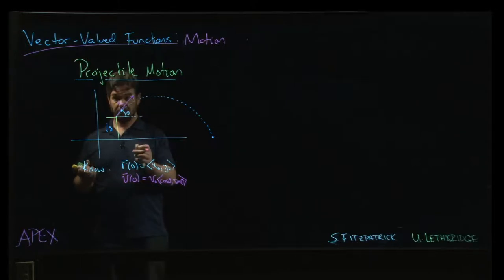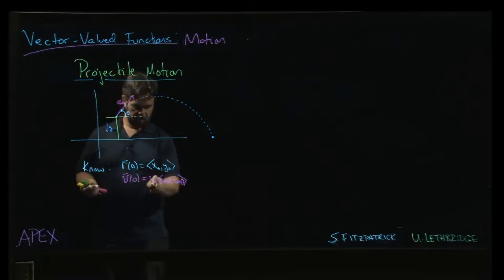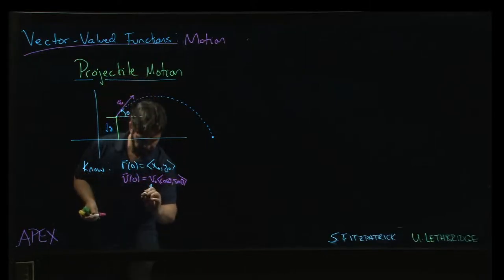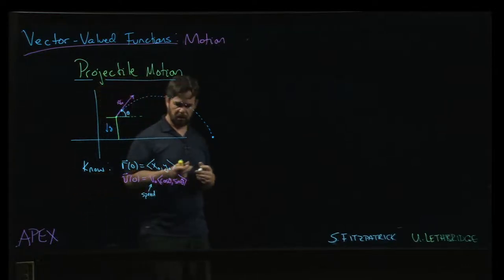That should be our unit vector. The unit vector here accounts for the elevation. The V naught here is our speed, muzzle velocity, whatever you want to call it - the speed at which it comes out.